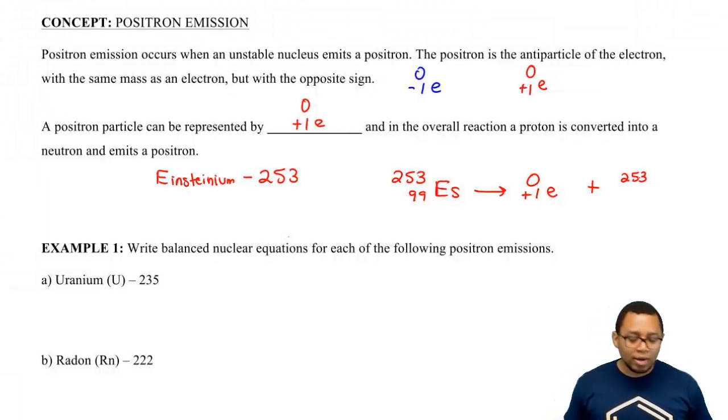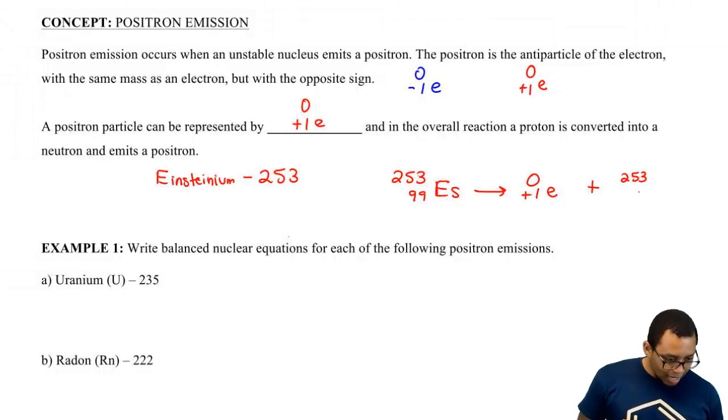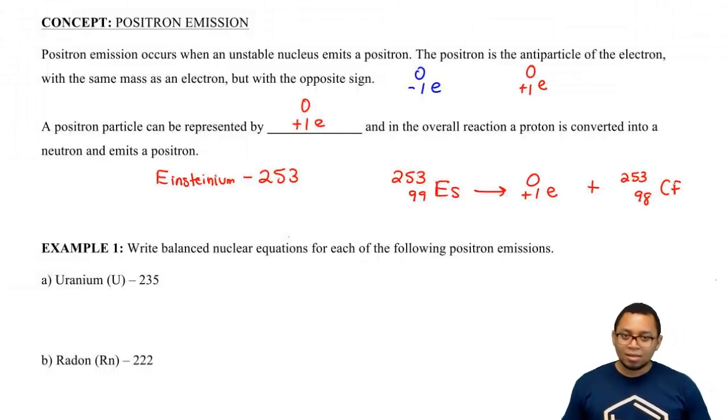But because the bottom is 1, what number plus 1 gives me 99? It'd have to be a 98. So here, that would just be CF. So this would be an example of a positron decay or positron emission.